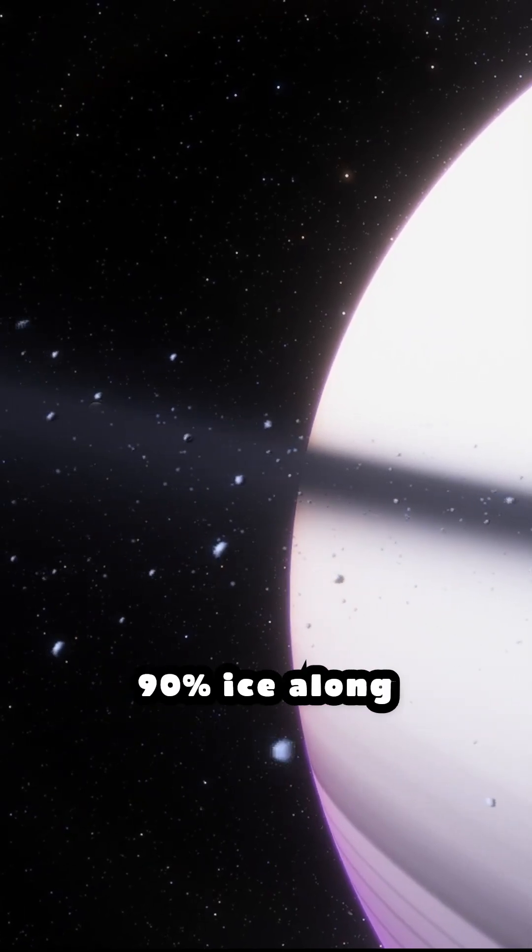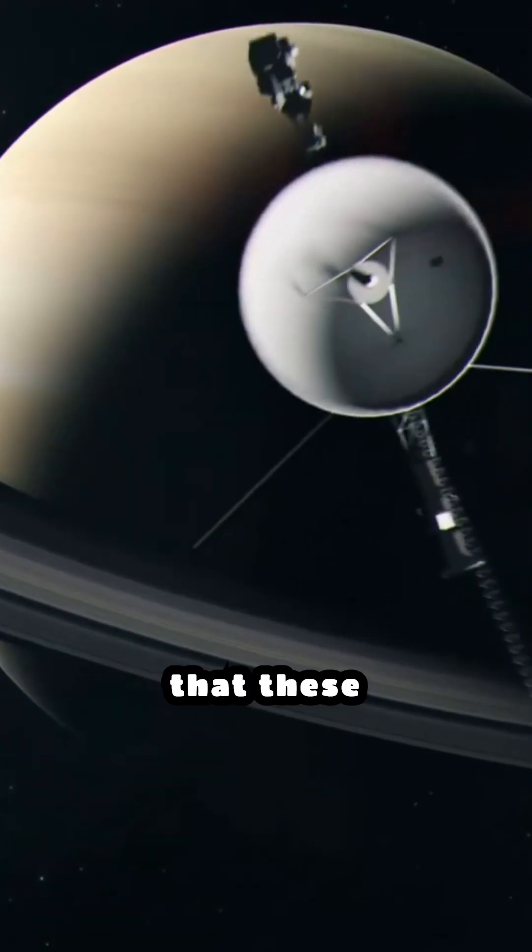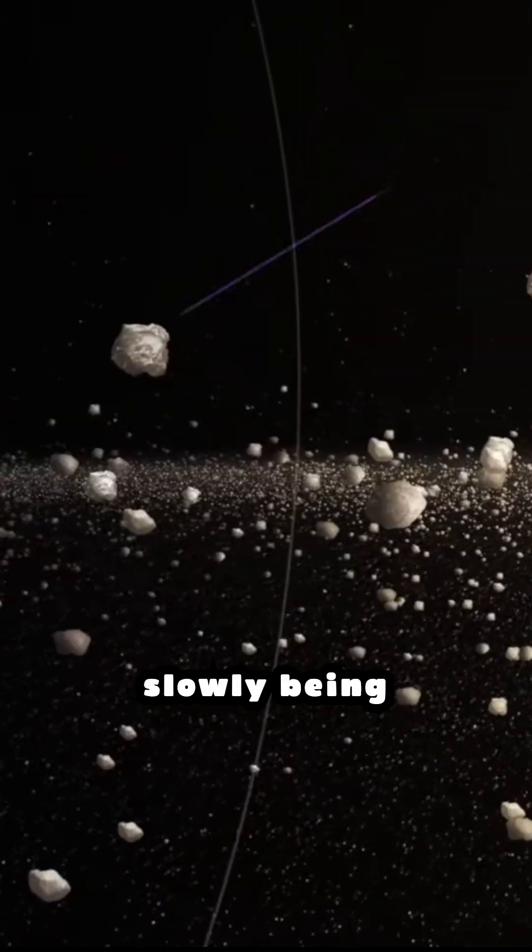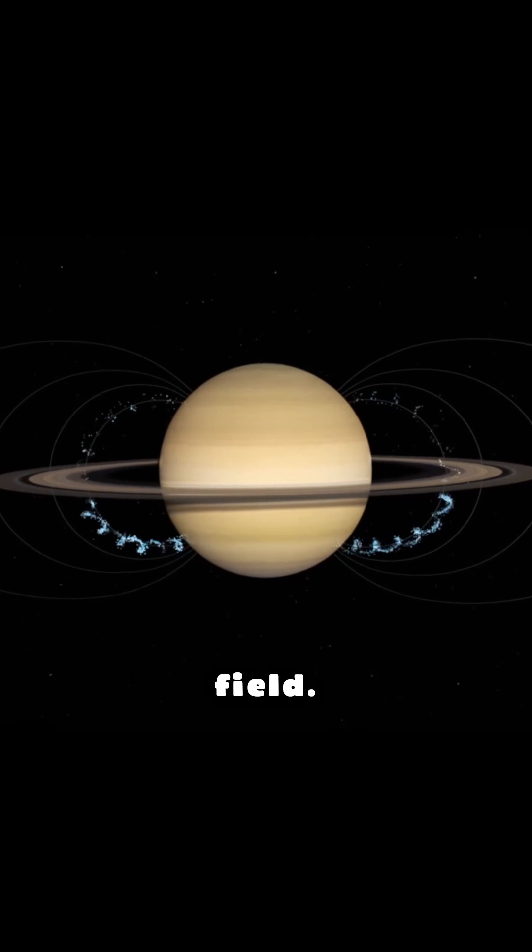Saturn's rings are made of 90% ice along with rocks and dust. In 1977, NASA launched Voyager 1 and 2 and they found out that these particles are slowly being pulled into Saturn's atmosphere by its gravity and magnetic field.